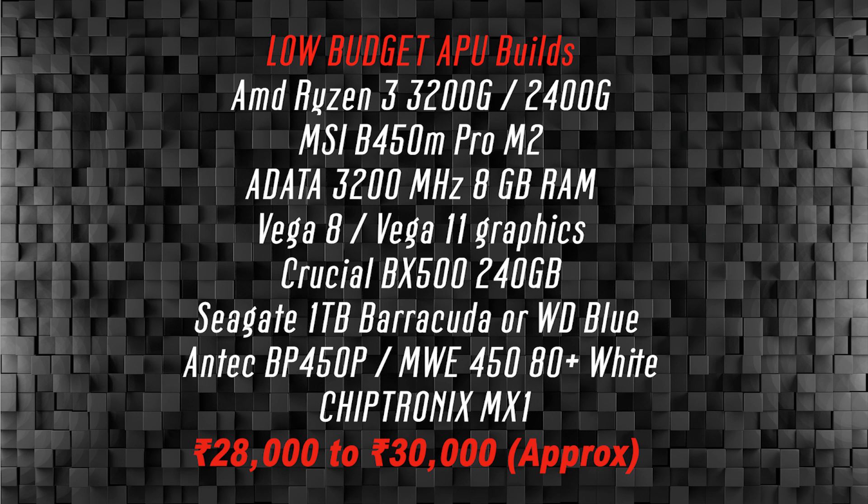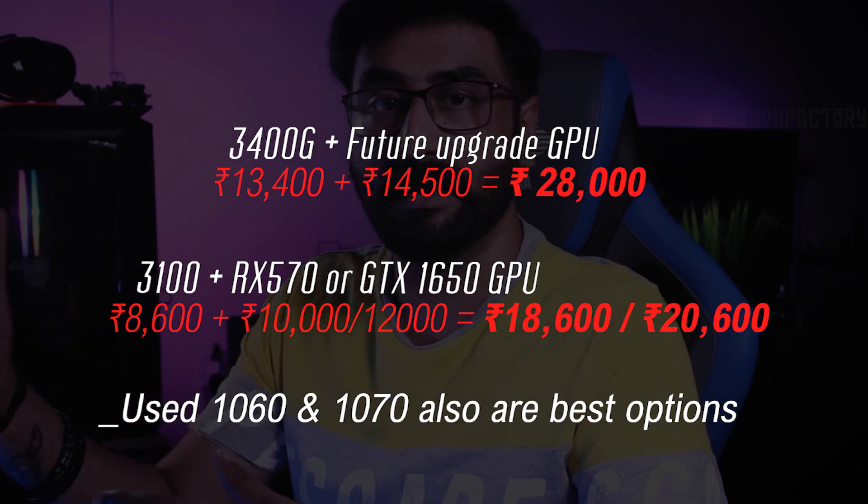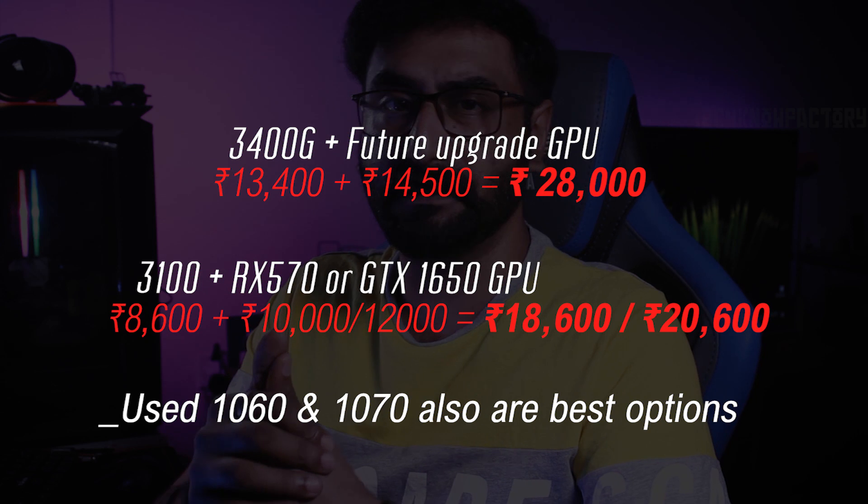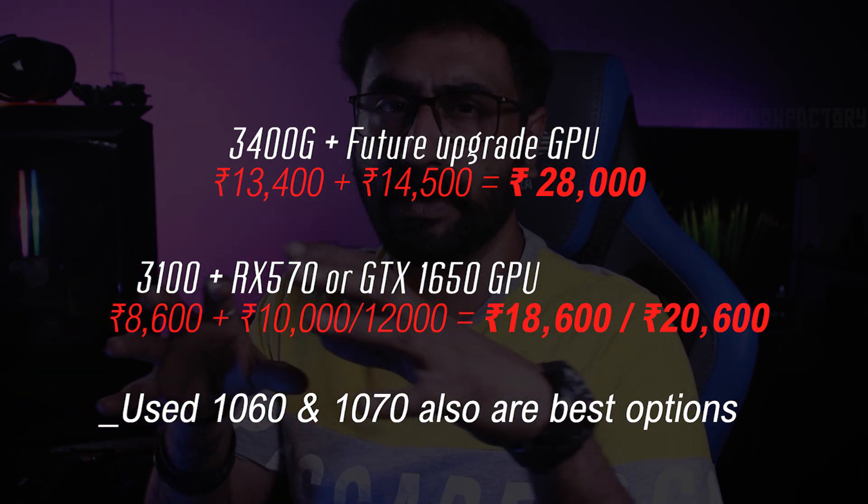My recommendation is the Ryzen 3200G or 2400G APU — but only if your budget is under 25,000 Rs. If you can go above that, invest in a proper CPU and dedicated graphics card combo instead of an APU. An APU is essentially combining the CPU and graphics card in one chip.